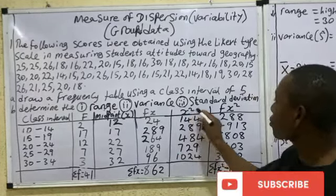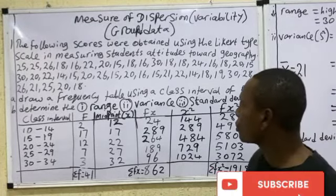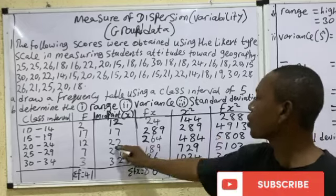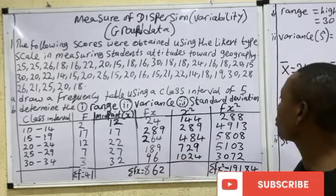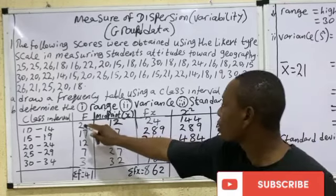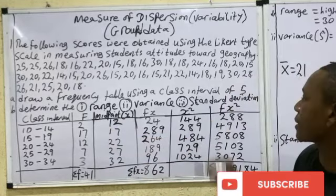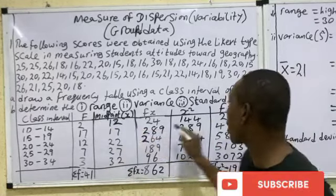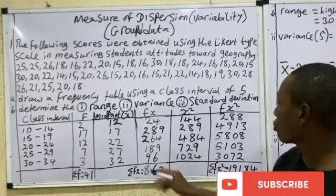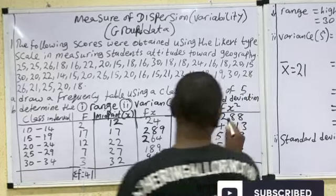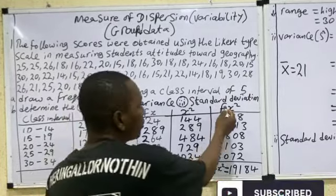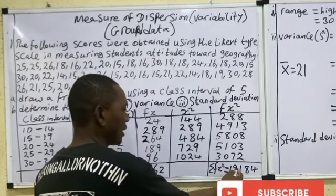Next, find x² by squaring each midpoint: 12² = 144, 17² = 289, 22² = 484, and so on. Then find fx² by multiplying each frequency by its corresponding x². Sum all the fx² values; the total summation of fx² is 19,184.